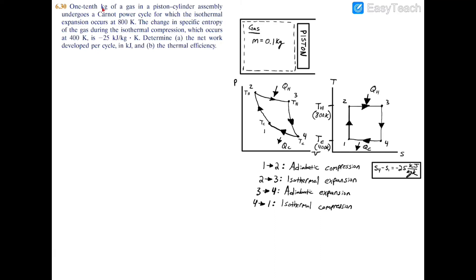Alright guys, in this problem we have 0.1 kg of gas in a piston-cylinder assembly undergoing a Carnot power cycle. We have isothermal expansion at 800 K, isothermal compression at 400 K, and a change in specific entropy of -25 kJ/(kg·K) during the isothermal compression.